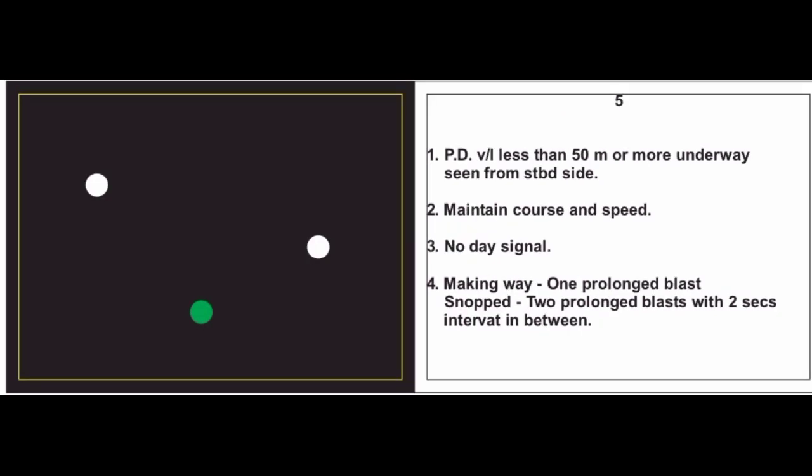Card 5: A power driven vessel 50 meters or more, underway, seen from starboard side. Two masthead lights confirm the vessel is more than 50 meters — one masthead light means less than 50 meters. Since we are seeing from starboard side, we maintain our course and speed. No day signal. Sound signal: making way — one prolonged blast; stopped — two prolonged blasts with two-second interval.